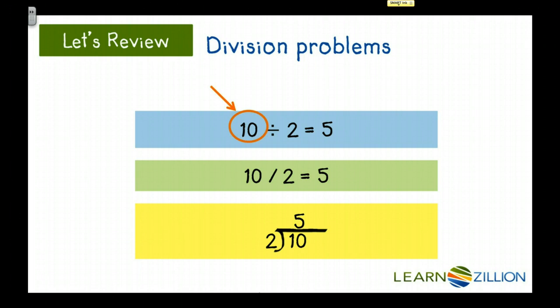The number of students in the class, 10, is known as the dividend. The number of students in each group, the 2, is known as the divisor, and the number of groups, 5, is known as the quotient.